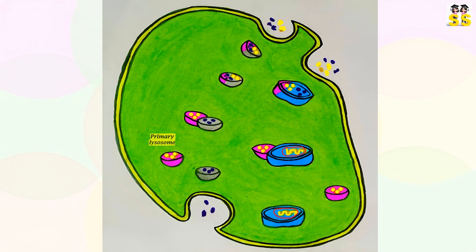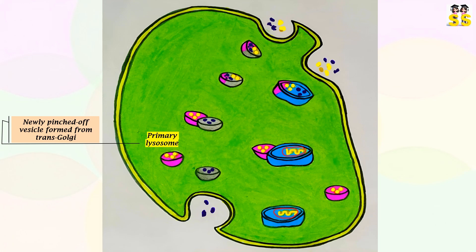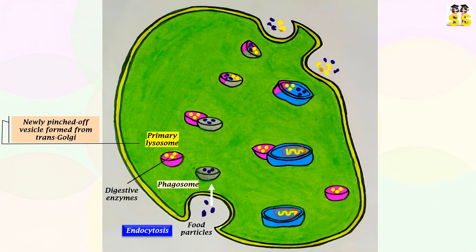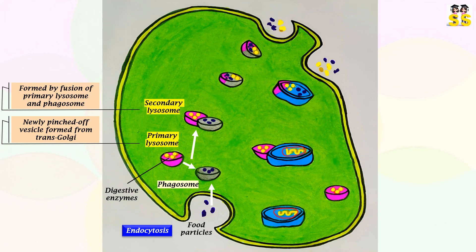Primary lysosomes are formed by new vesicle budding off from the membrane of the trans-Golgi network. Once macromolecules, such as food particles, are absorbed into the cell by endocytosis, they are enclosed in a membrane-bound vesicle called a phagosome. Primary lysosomes with inactive digestive enzymes fuse with the phagosome, thereby forming the secondary lysosome.